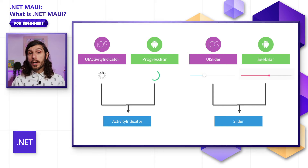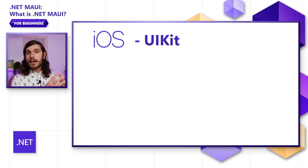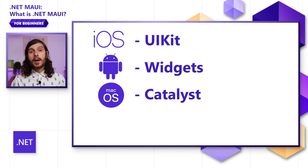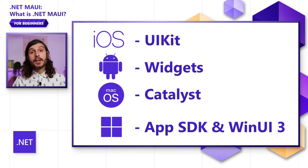When your application starts up, whatever code you create — let's say a button — .NET MAUI will generate and render the native control. This means on iOS you're getting UIKit, on Android you're getting Android widgets, on Mac you're leveraging Mac Catalyst, enabling you to run your iOS applications directly on Mac devices and light up native Mac features, and of course on Windows, leveraging the latest Windows App SDK and WinUI 3.